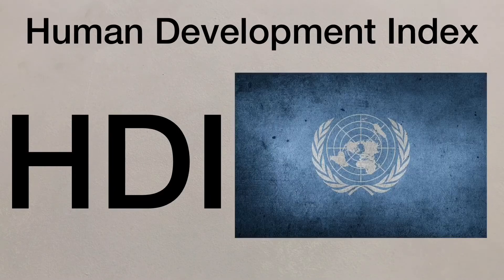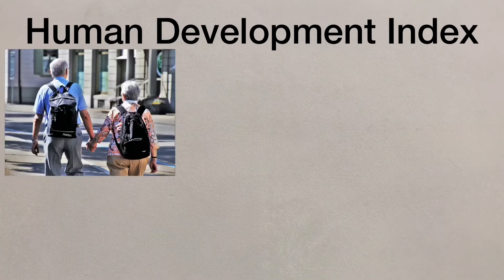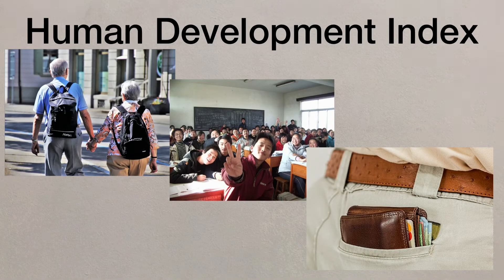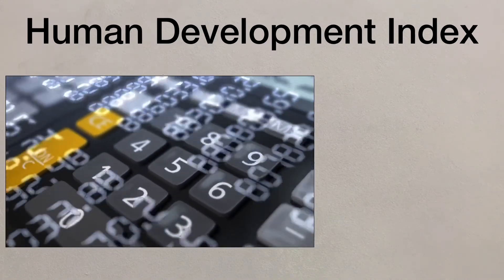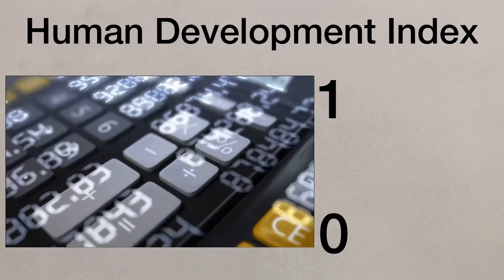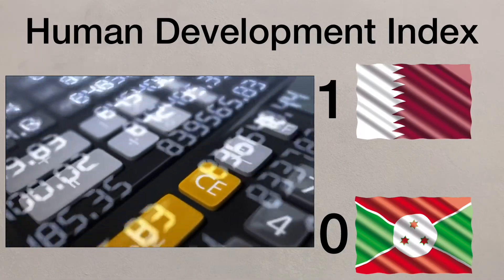The Human Development Index, or HDI, is a measure from the UN. It's a social measure that uses three different indicators to see how people have benefited from economic development. The three measures are life expectancy at birth, number of years in education, and GNI per capita. Using these three indicators together, the HDI is then calculated to create a value between 0 and 1, with 1 being the highest. By doing this, countries can then be ranked to show their level of development.